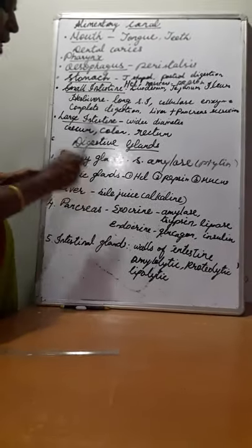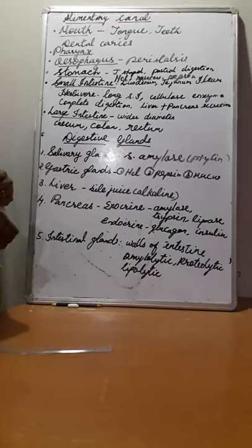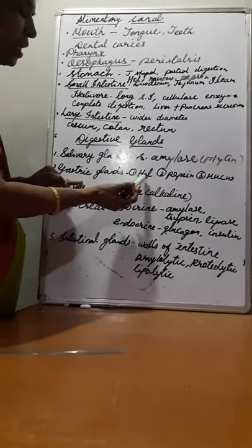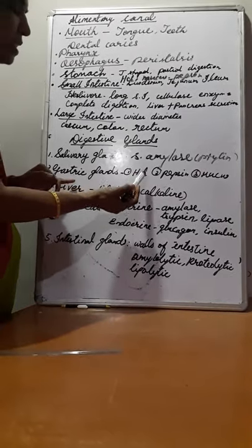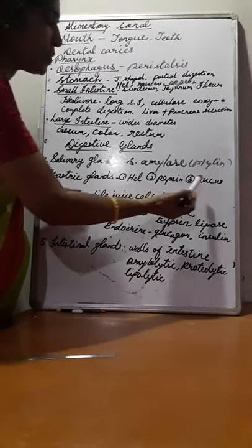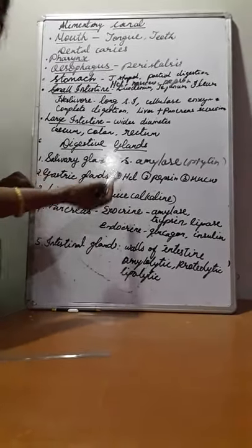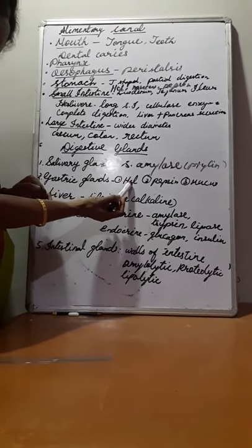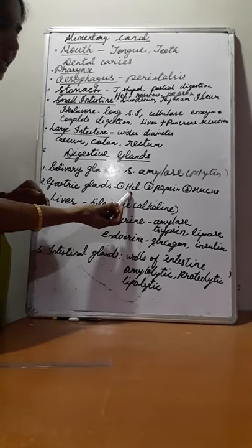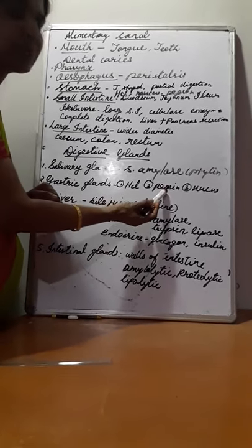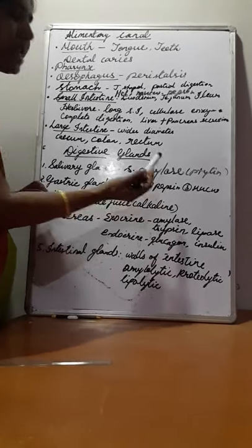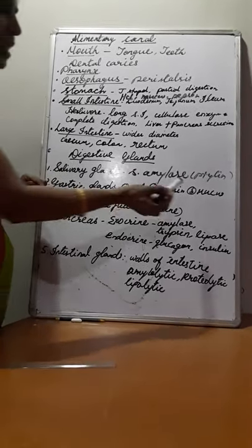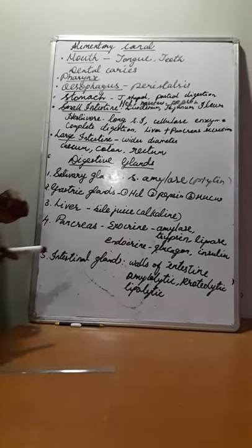Next are the gastric glands, present in the stomach. They secrete three things: hydrochloric acid, pepsin, and mucus. Hydrochloric acid kills the germs in the food, makes the medium acidic, and helps the pepsin enzyme to act. Pepsin breaks protein molecules into simpler form — peptones. Mucus protects the wall of the stomach.